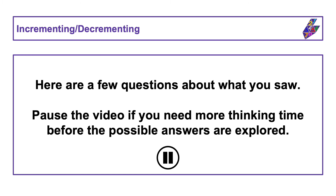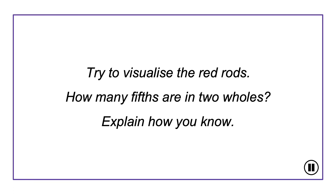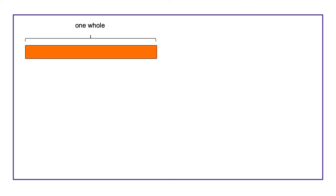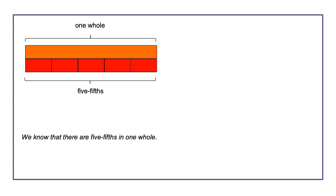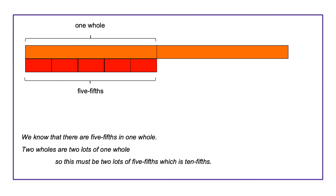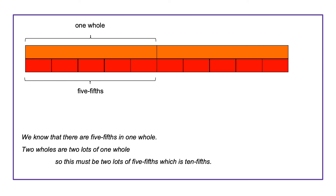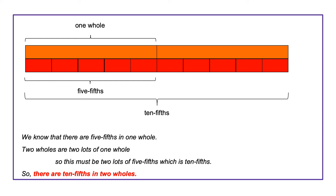Here are a few questions about what you saw. Try to visualise the red rods. How many fifths are in two wholes? Explain how you know. We know that there are five-fifths in one whole. Two wholes are two lots of one whole, so this must be two lots of five-fifths, which is ten-fifths. So there are ten-fifths in two wholes.